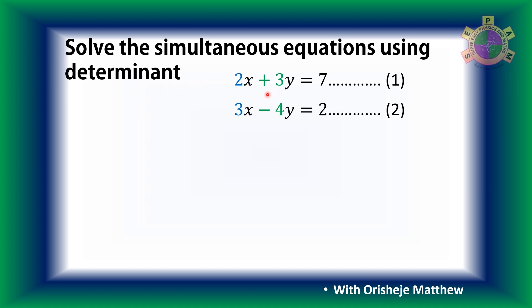What is the equation given to us? 2x plus 3y equals 7, then 3x take away 4y equals 2. What we need to do is create a 3 by 2 determinant using the coefficients and the constants of the two simultaneous equations.